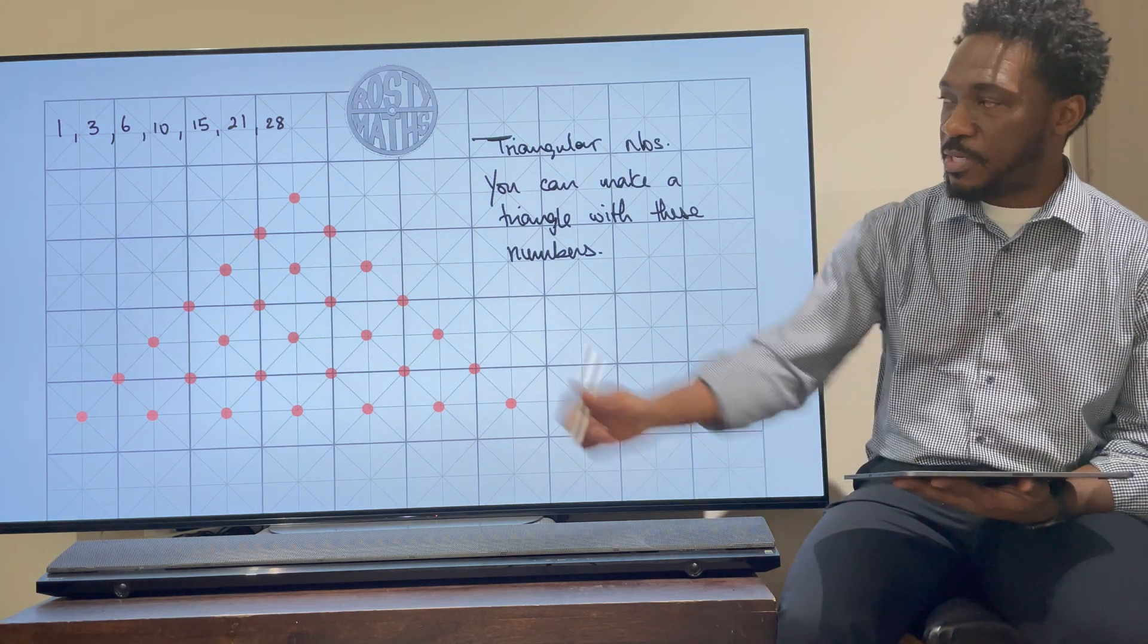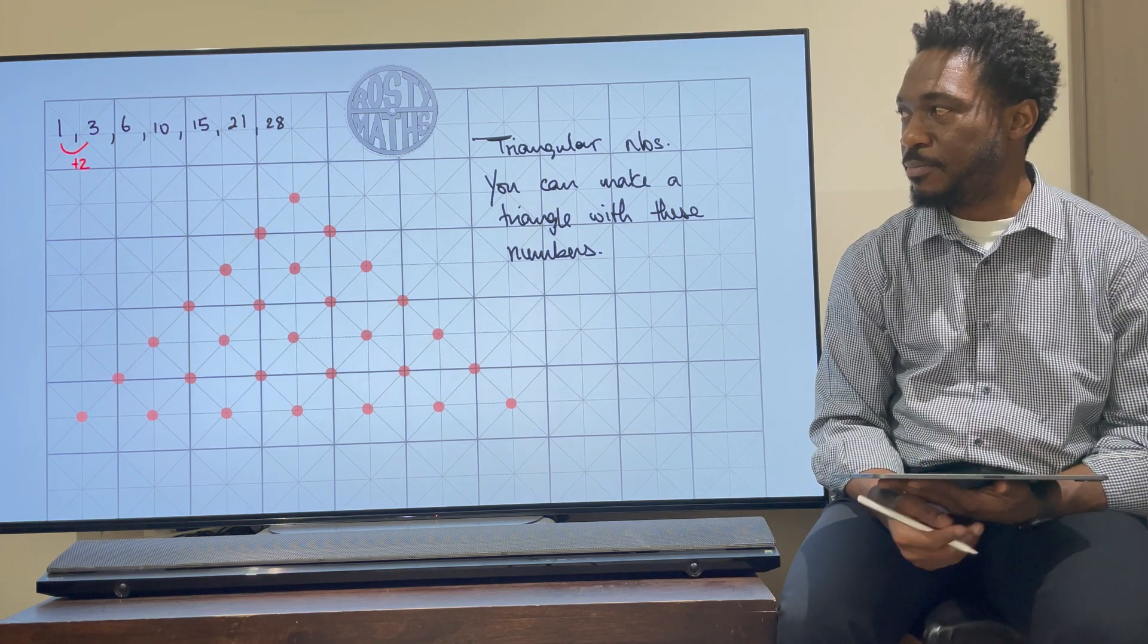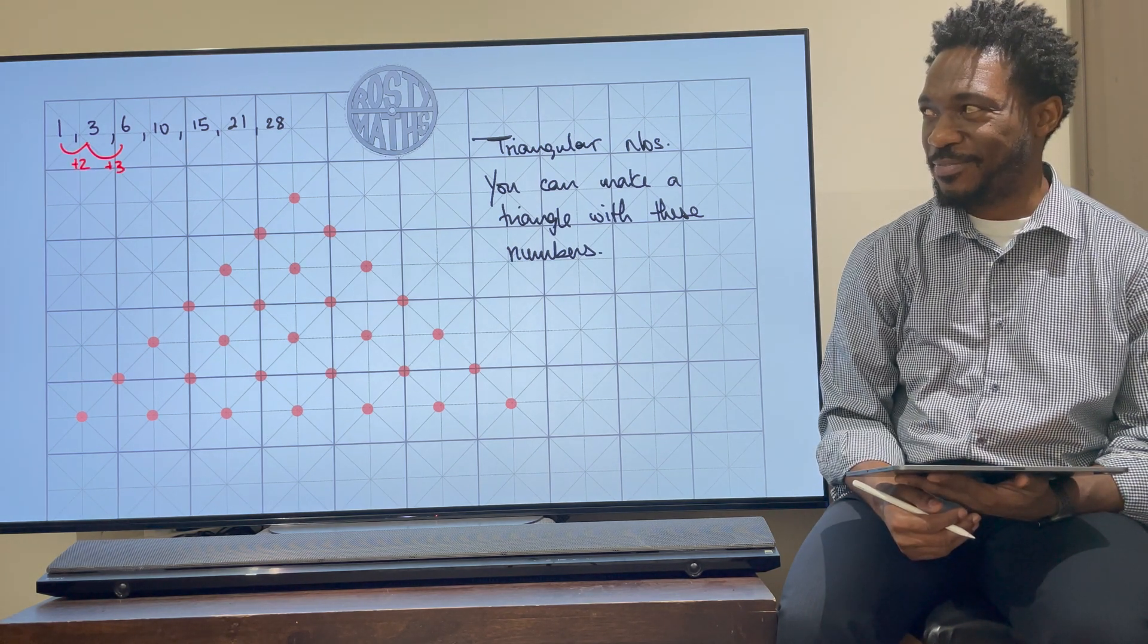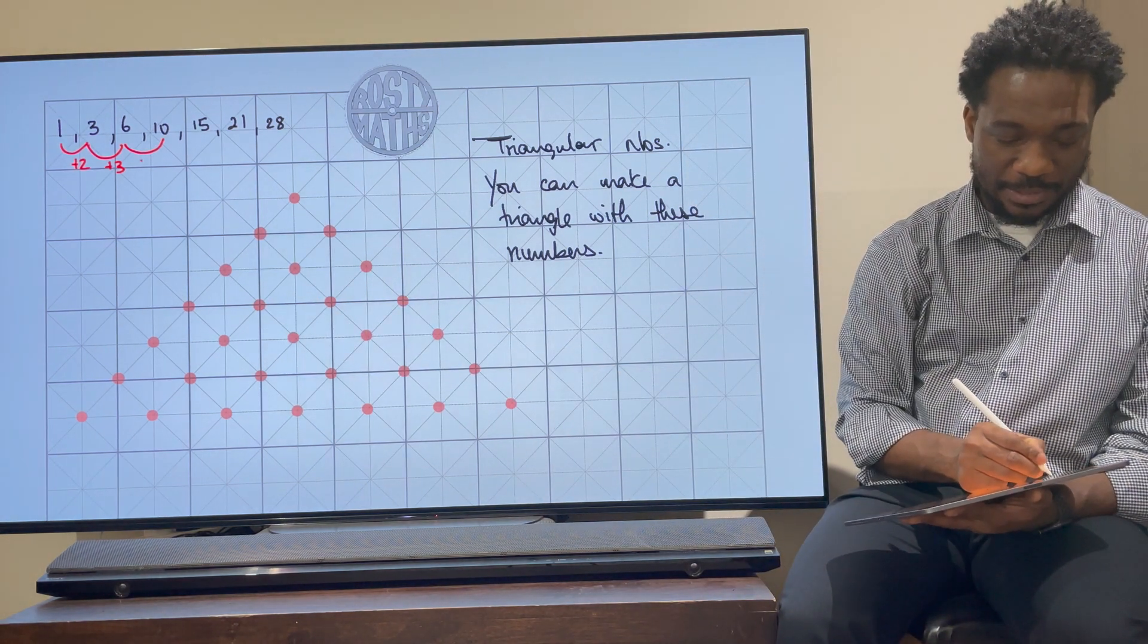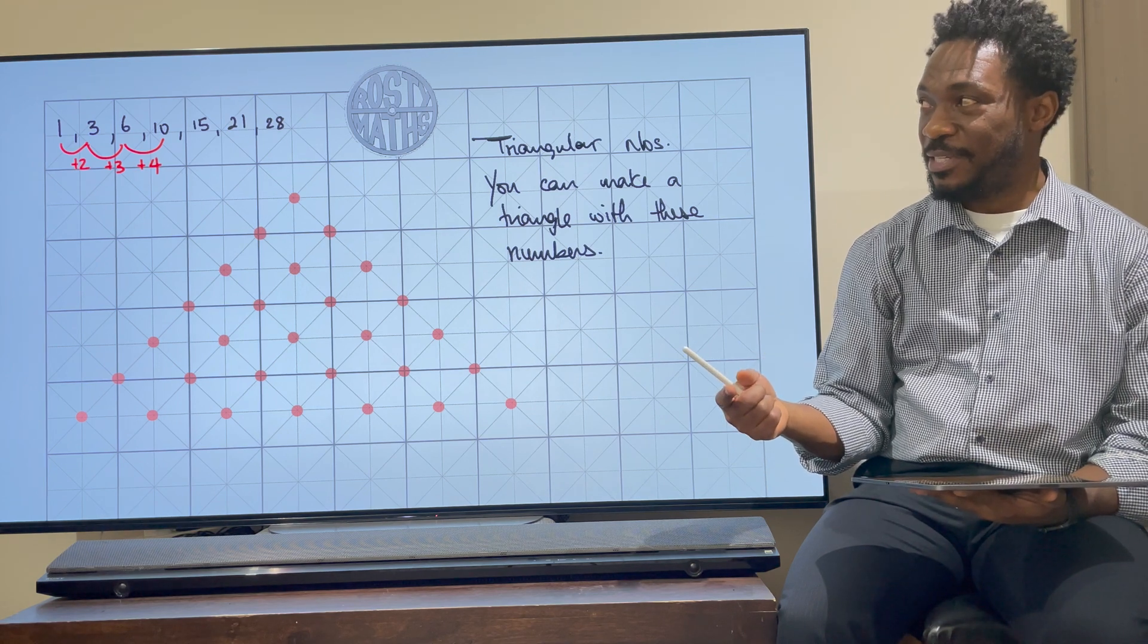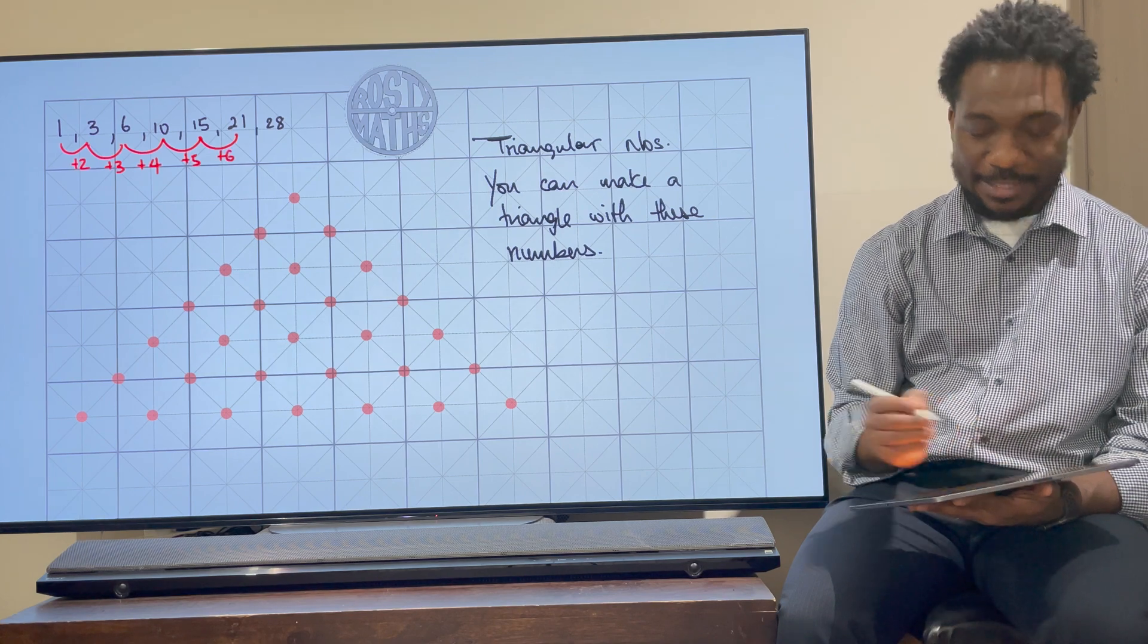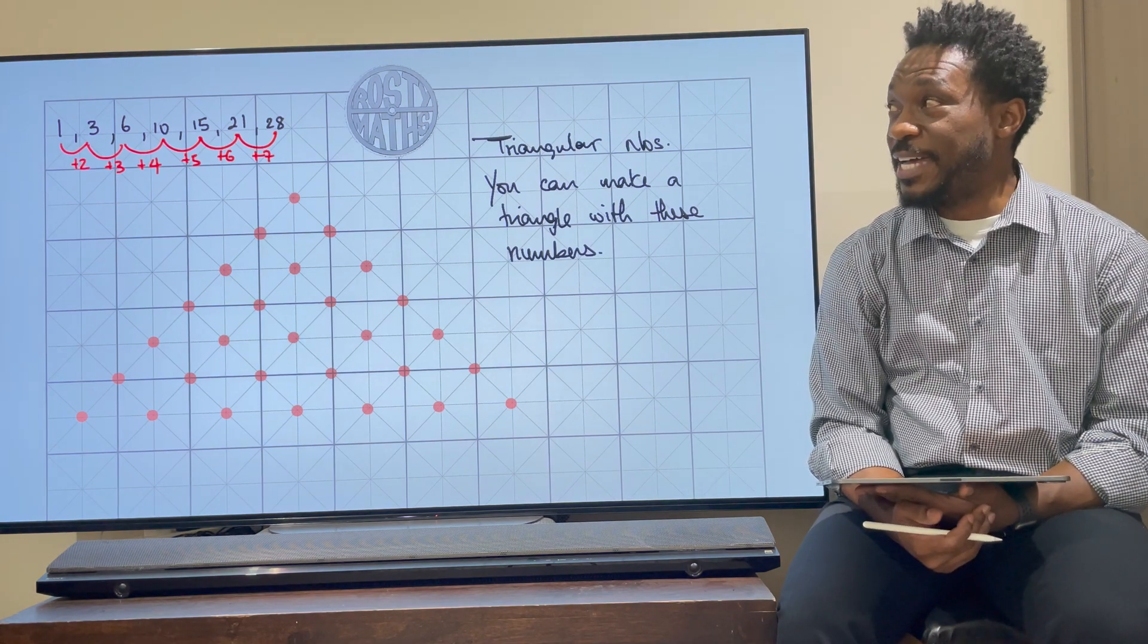We're going to start with 1. 1 is fine. Now to get 3 we added 2 more, because we just added 2 more there. To get 6 we added 3 more. Can you see what's happening? To get 10 we had to add 4 more, so that's another 4 added on there. Can you see the pattern? Each number that you add on, you just add one more to it. So if I added 4 to my last number, I have to add 5 to the next number, and then I have to add 6 to the next number, and I have to add 7 to the next number, and so on. And that's how we find our triangular numbers.